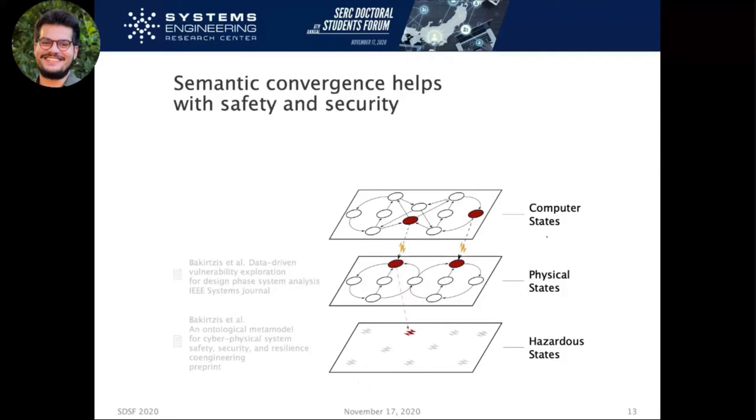I realized that a lot of faults in cyber-physical systems have different layers of abstraction themselves. We have computer states, physical states, and hazardous states, but they're kind of connected. If something happens wrong in your computer state, it can affect your physical state, and then you can bring the system to a hazardous state that can cause an accident. Obviously, there is the other, that something can happen in the physical environment that influences your controller that causes a hazardous state. I'm claiming that if we have semantic convergence at the modeling stage, even when we implement and deploy the system, we're going to have better tests for making sure these things don't happen.